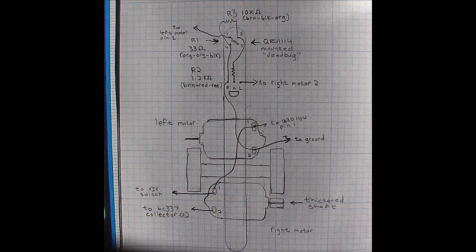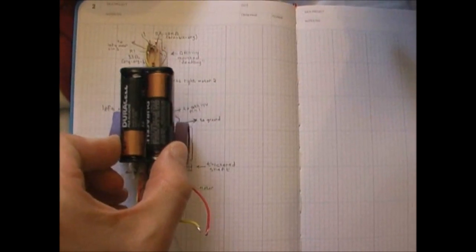Here we have the build diagram for the little robot. Basically, you take a popsicle stick. Here's the robot. You can see it's a scaled drawing.